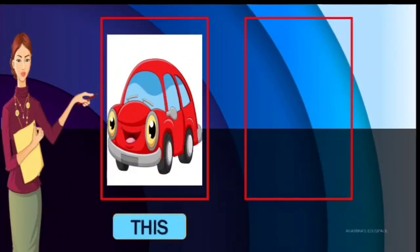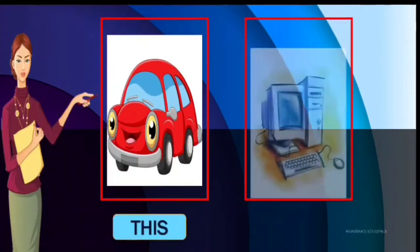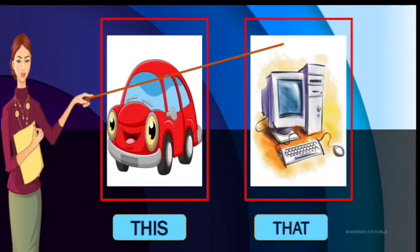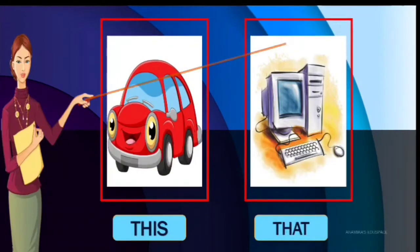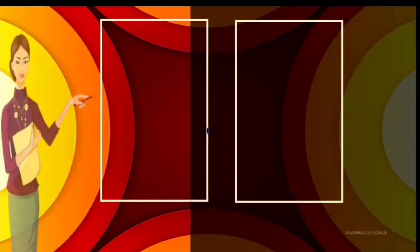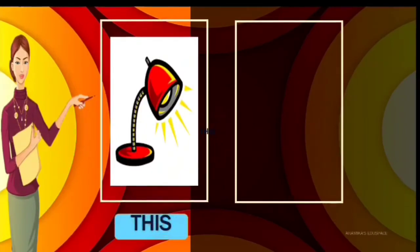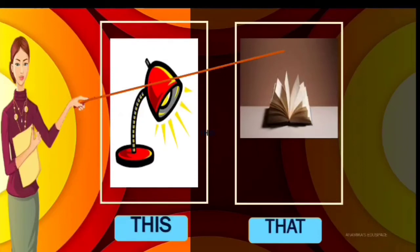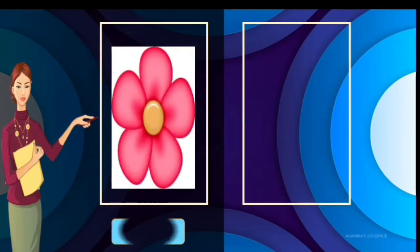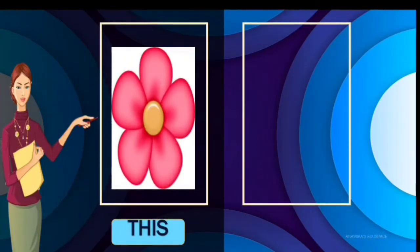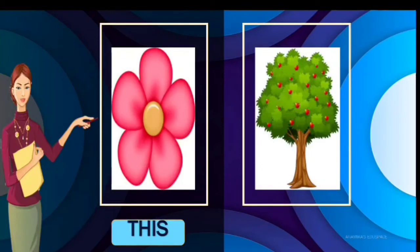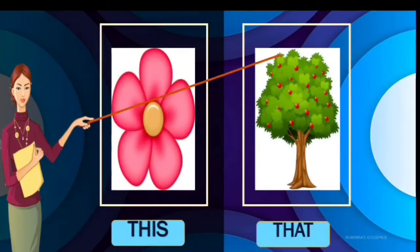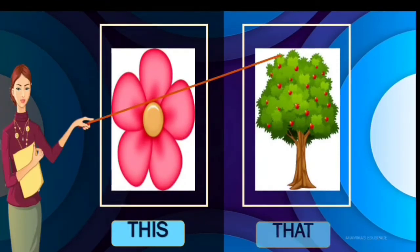Computer — that is a computer, T-H-A-T. Lamp — this is a lamp, T-H-I-S. Book — that is a book, T-H-A-T. Flower — this is a flower, T-H-I-S. Tree — that is a tree, T-H-A-T.